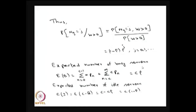Once I know the expected number of busy servers, I can find out the expected number of idle servers also. The idle number is a random variable — there are totally c servers in the system, so idle servers I equal c minus busy servers B. Therefore c minus B equals I. The expectation satisfies the linear property, so expectation of I equals c minus expectation of B. Expectation of B we just got as c times rho. Therefore the expected number of idle servers is c times 1 minus rho.